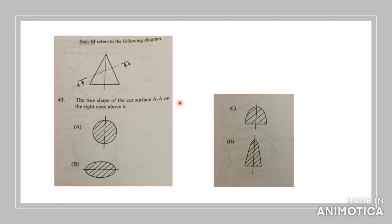The true shape of the cut surface A-A on the right corner above. So it's asking, when you cut the corner above at A to A, what would you actually see? If you cut it at a diagonal, you would not see a perfect circle.